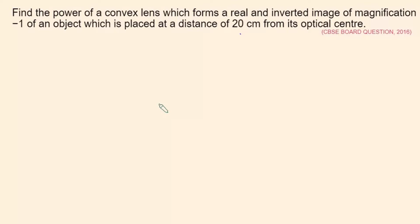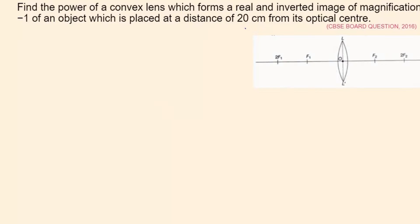So we have a convex lens and there is an object situated at a distance of 20 centimeter from the optical center. Because of refraction it produces an image, and the image is a real and inverted image with magnification minus one. Using these data we have to find out the power of this convex lens. The object is situated at 20 centimeter from its optical center, so I write object distance is minus 20 centimeter.